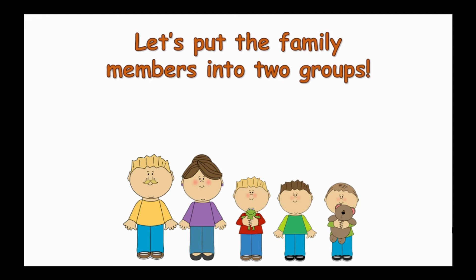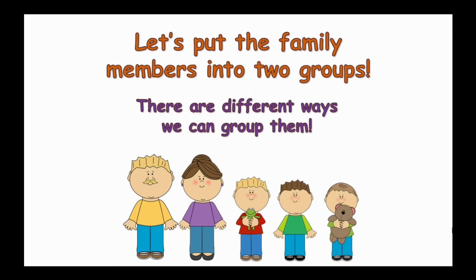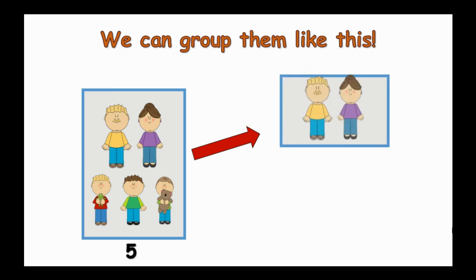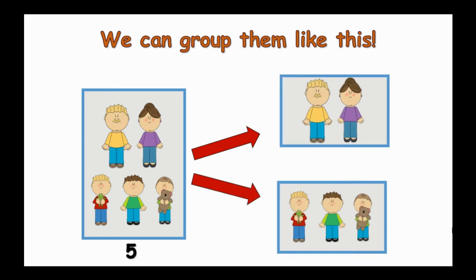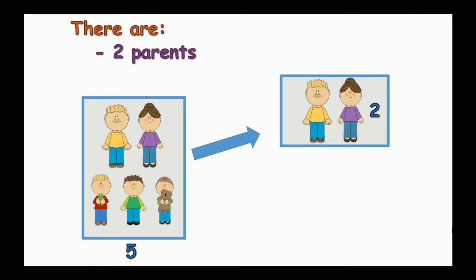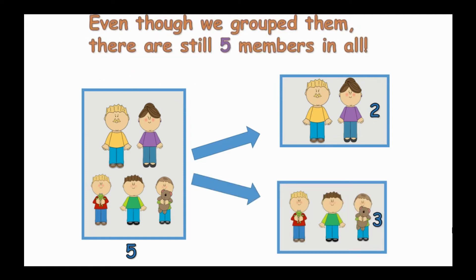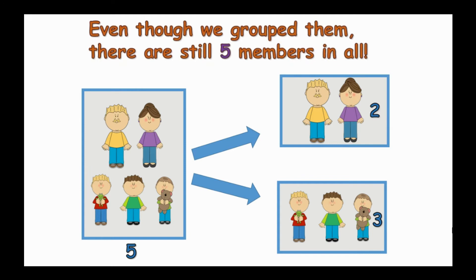Let's put the family members into two groups. There are different ways we can group them. We can group them like this. There are two parents and three children. Even though we group them, there are still five members in all.